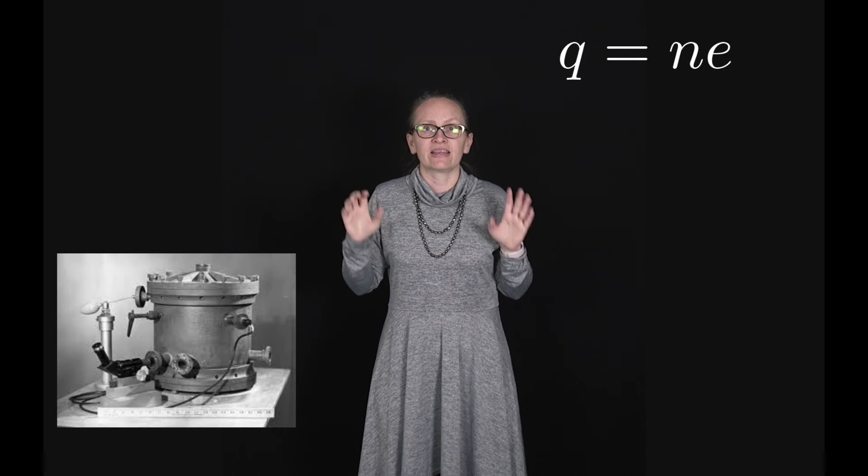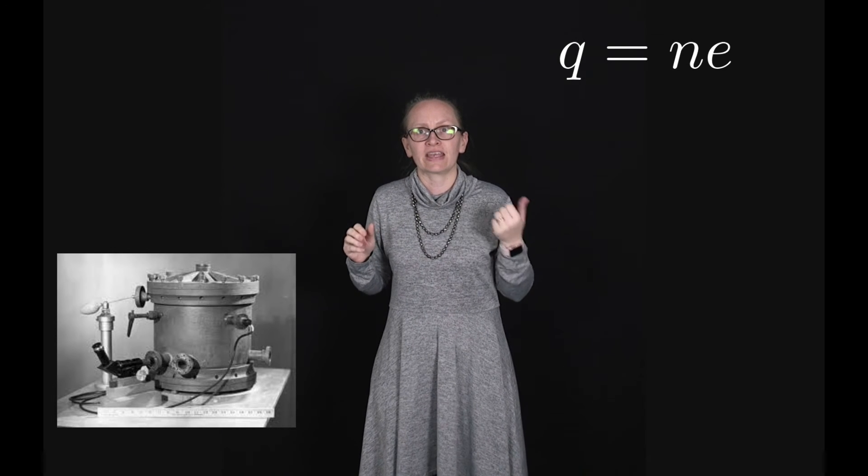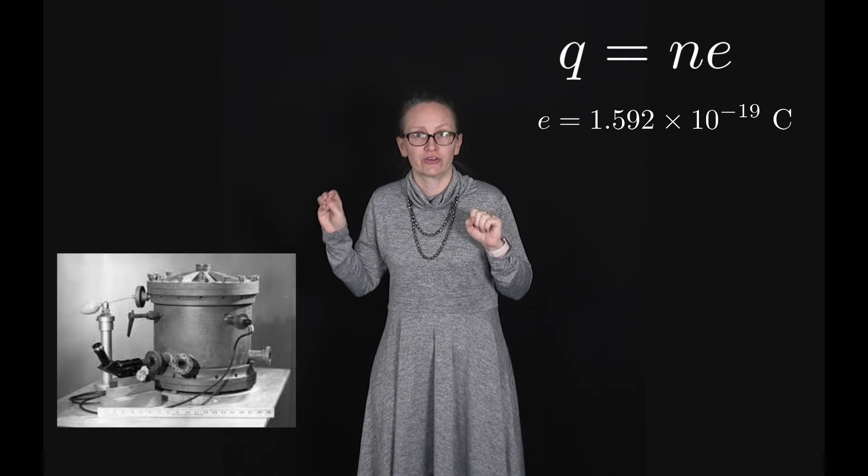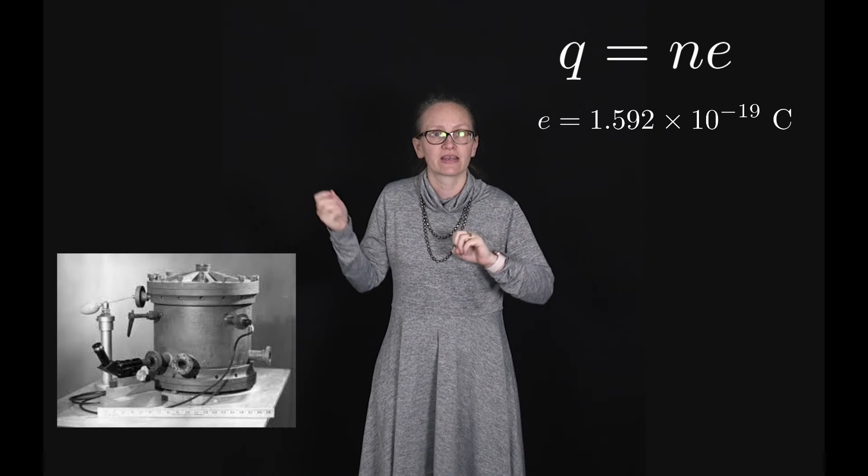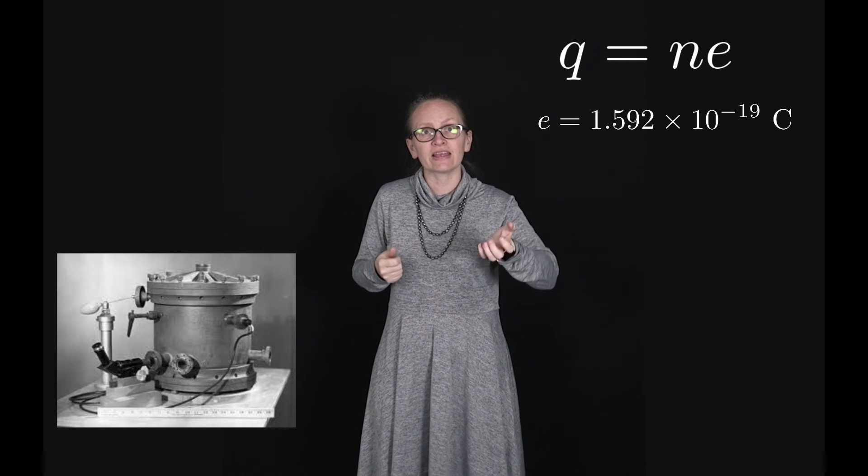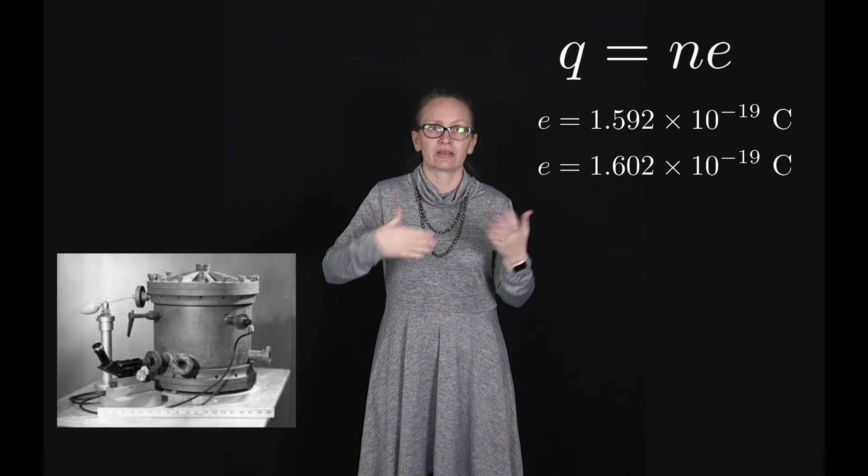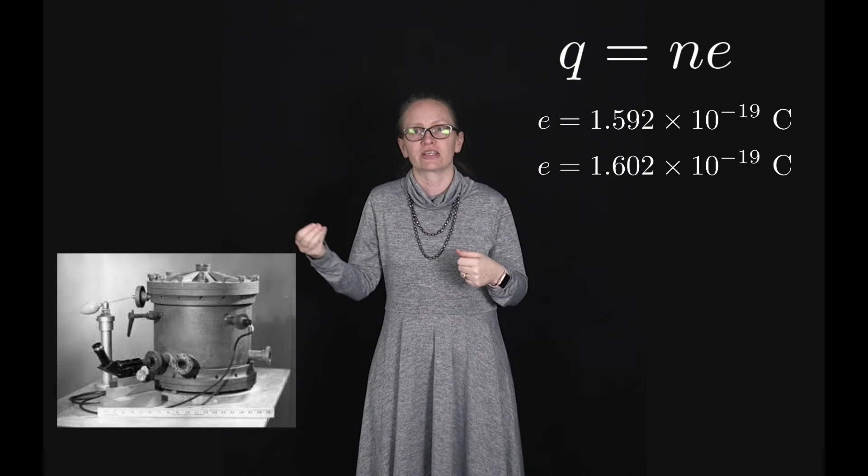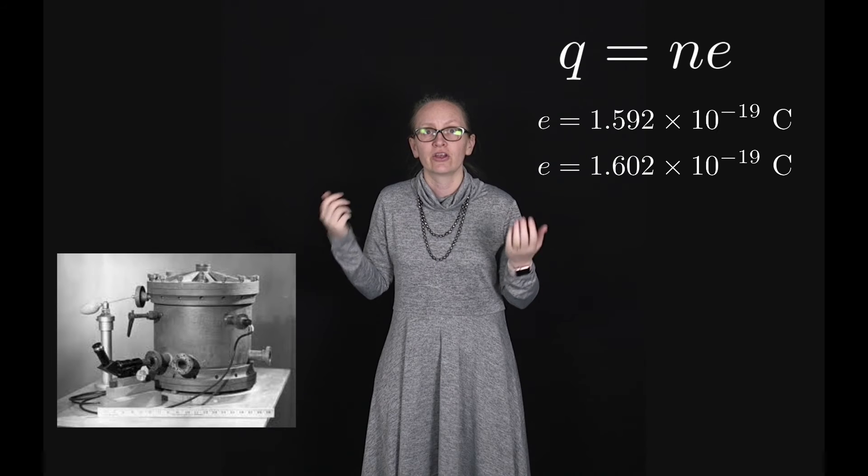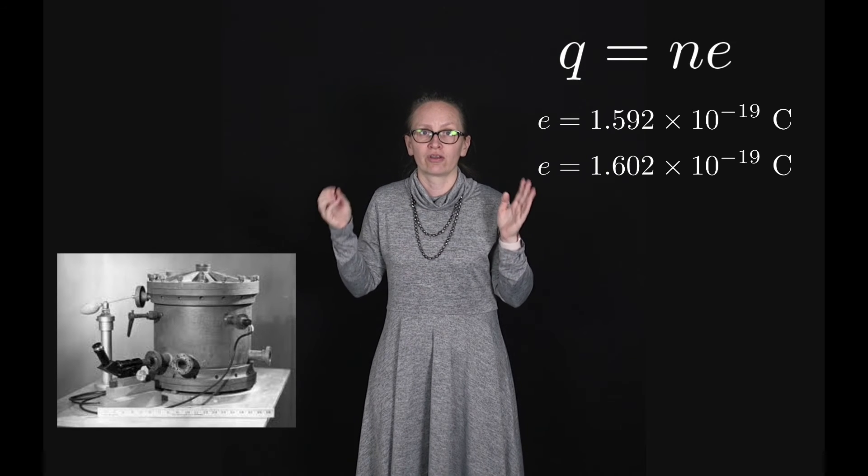Millikan and Fletcher realized that the charge on the droplets had to be given by the equation q equals ne where n is an integer and they found e to be 1.592 times 10 to the minus 19 coulombs. Now this value of e is very close to the now accepted value of 1.602 times 10 to the minus 19 coulombs as the charge on an electron.